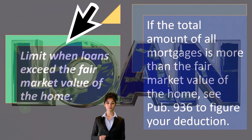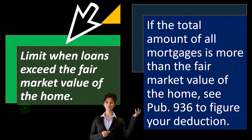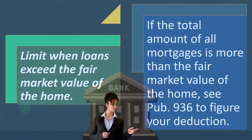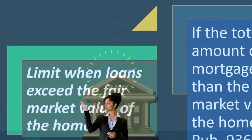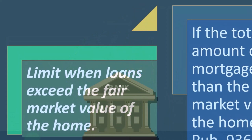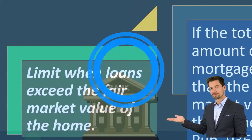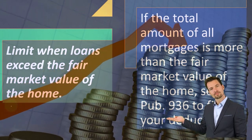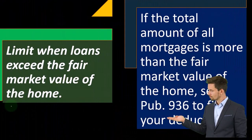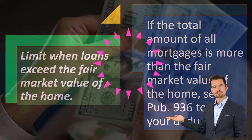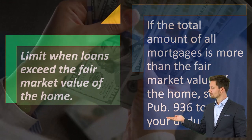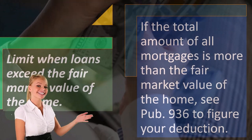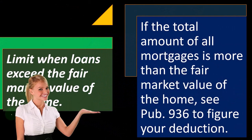Then we have the limit when loans exceed the fair market value of the home. This shouldn't happen normally because the bank doesn't want a situation where the loan amount is higher than the value of the home. The whole point of having the home as collateral is to make sure the borrower doesn't default. You'd expect 20% down under normal conditions unless things get unusual like during the mortgage crisis and the Great Recession. The home value would have to drop substantially for the loan balance to exceed the home's value.